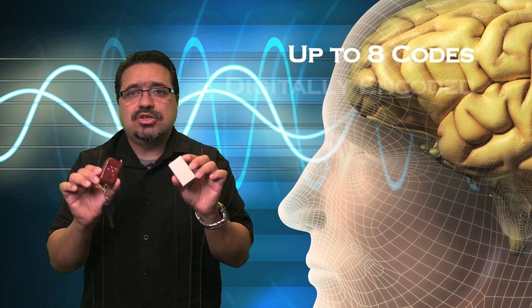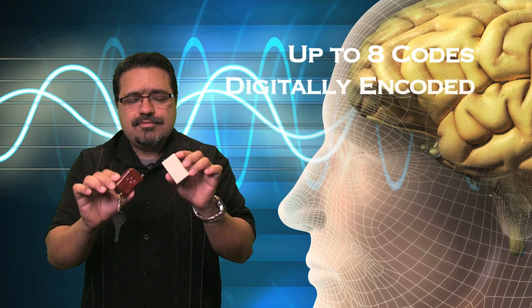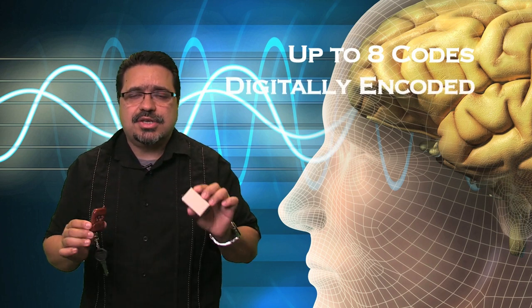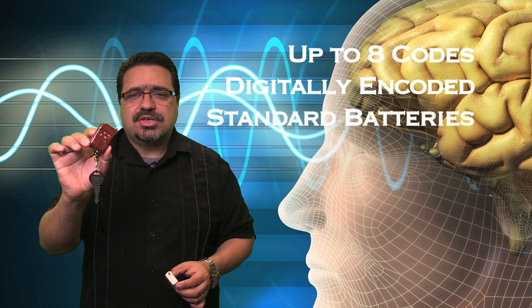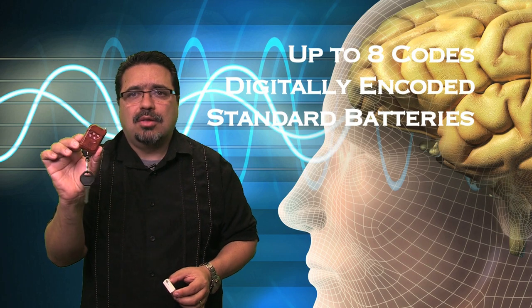Each unit is digitally encoded to prevent interference. The receivers operate on a single AAA battery. The car alarm size remote uses a standard battery that you can buy at any RadioShack and Walmart.